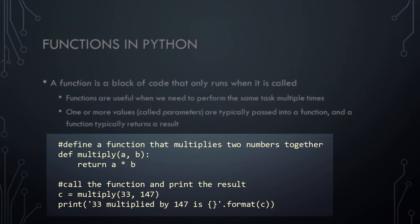In this first example, we're defining a function named 'multiply', which takes two input parameters, a and b. We define the function by using the 'def' keyword, followed by the name of the function, a comma-separated list of parameters enclosed in parentheses, and a colon. All lines of code that belong to the function appear indented after the def statement. This particular function simply multiplies the values stored in a and b together and then returns the result. We can then call the function — here we're storing the result in a variable named c, and then printing the value of c to the screen.